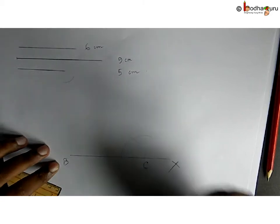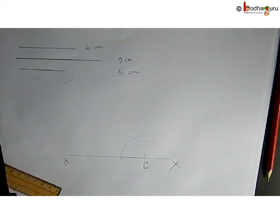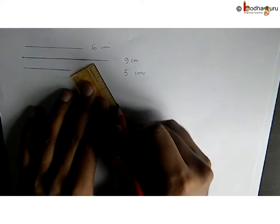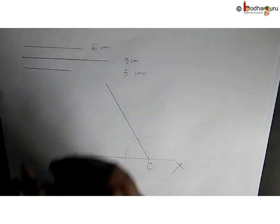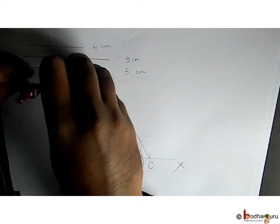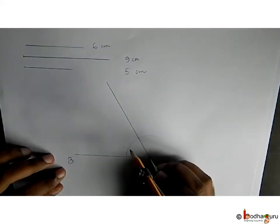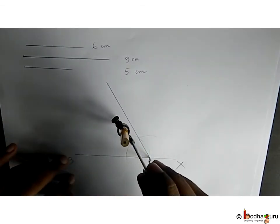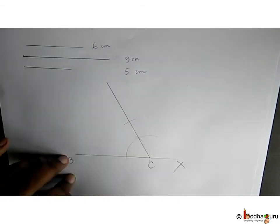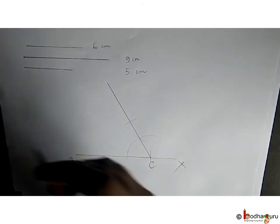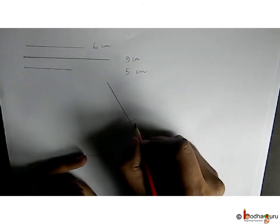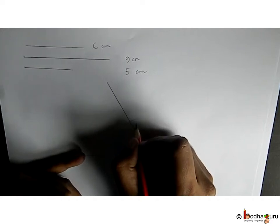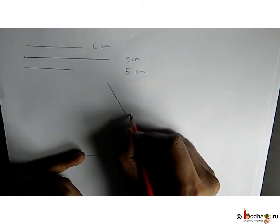So this is CD. Now we need to make CD equal to 5 cm. We take 5 cm radius in compass, put needle on C and draw an arc that crosses this line. So this is CD of 5 cm long at 60 degree angle at C.